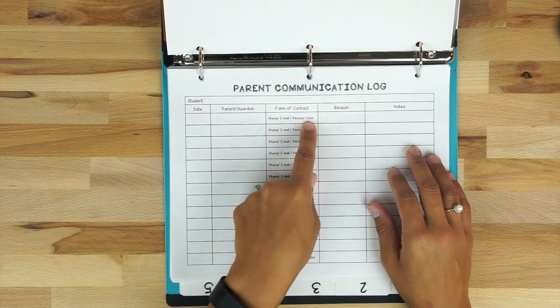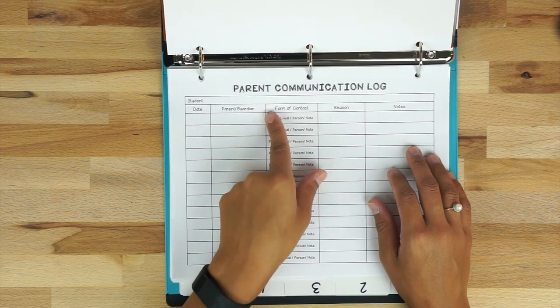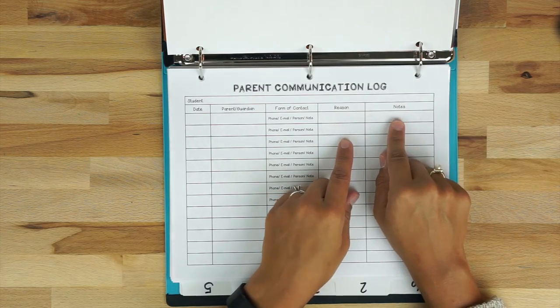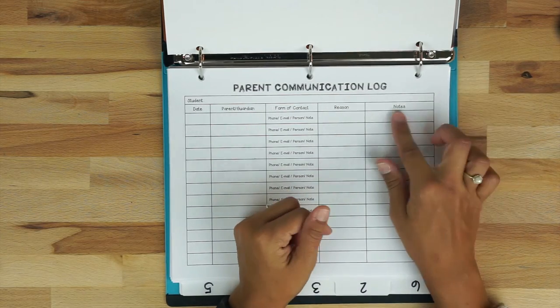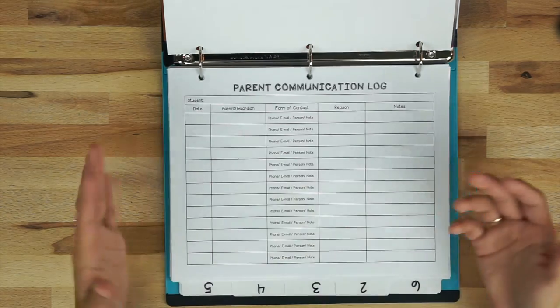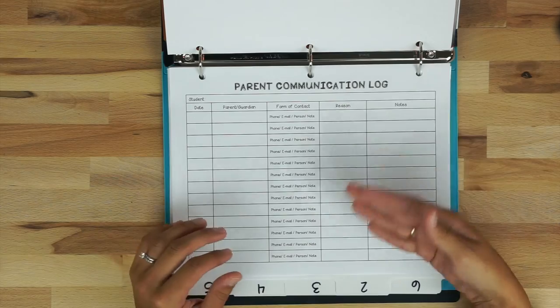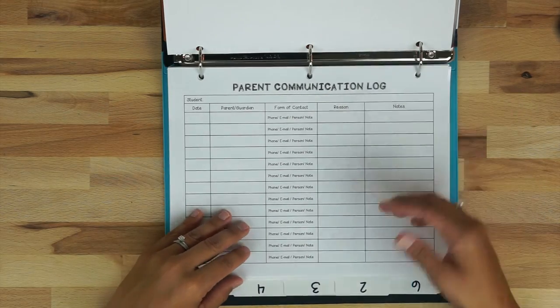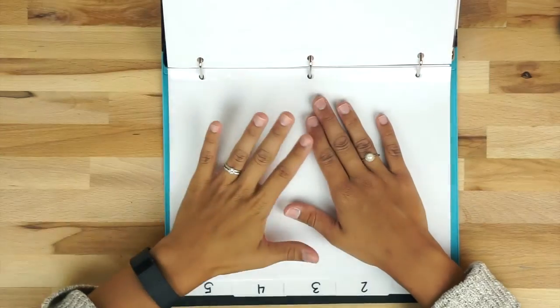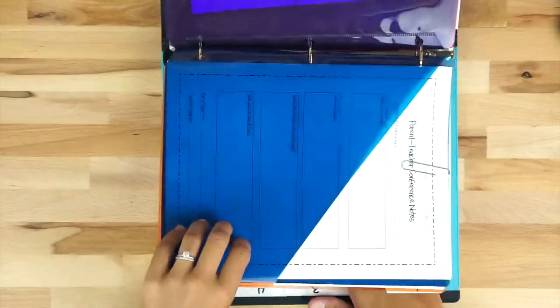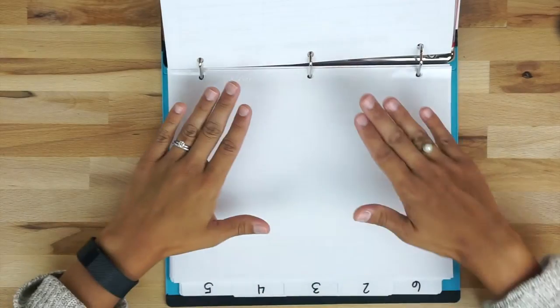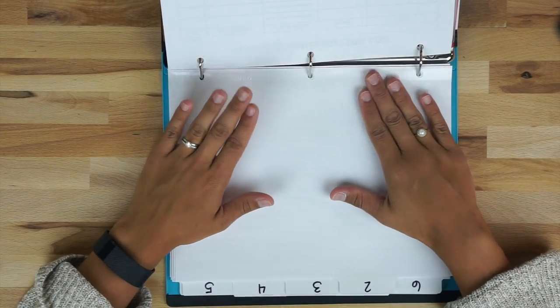So I have the date, I have the parent or the guardian that I spoke with, the form of contact I just circle the one that I have so I have phone, email, in person, or note so whichever form I contacted that parent I can just have it circled then I can write the reason and any kind of notes here. Now if need be and this section isn't big enough I take just a plain white copy paper anything that I can find and I can write those notes and then I can store them behind. So then back here I would essentially have the conference sheets, everything that I've gotten for that child would be stored back here in this section.